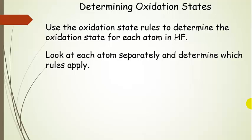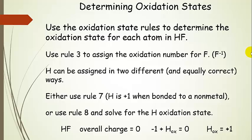Let's look at an easy example: hydrogen fluoride. We're going to look at the oxidation state for each atom, looking at each atom separately and determining which rules apply — start with rule 1 and work your way through. Rules 1 and 2 don't apply since we don't have an element by itself. We apply the rule that says fluorine always has an oxidation state of minus 1, so fluorine in this compound is minus 1.